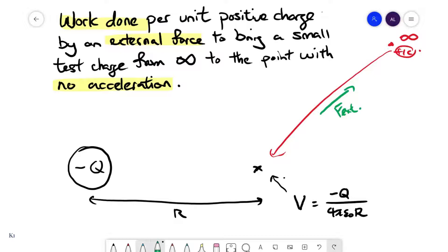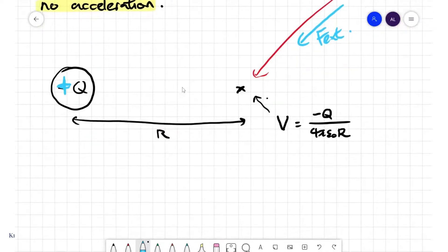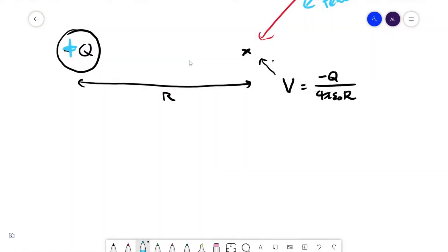Similarly, if I had changed this to a positive charge, then the nature of the field with respect to this guy is going to be a repulsive one. In order to push him from infinity to this point over here, the external force must then act this way, in the same direction as its motion, and therefore it does positive work.